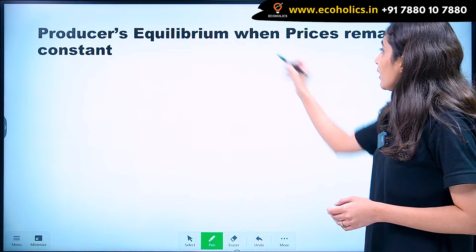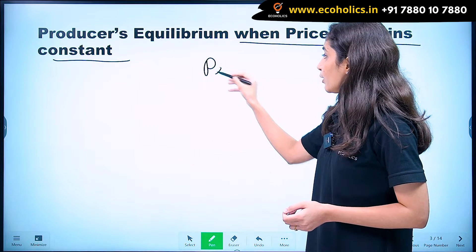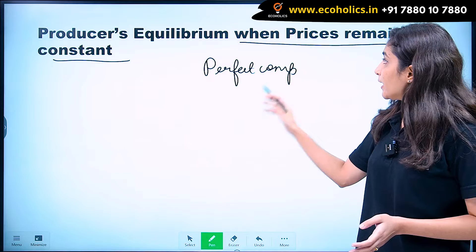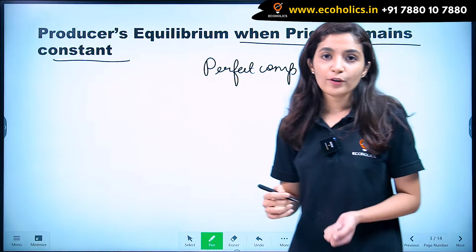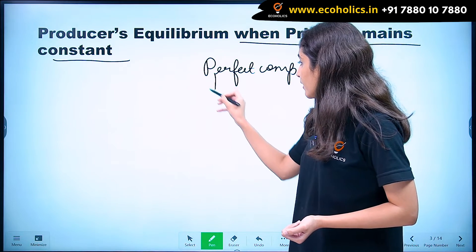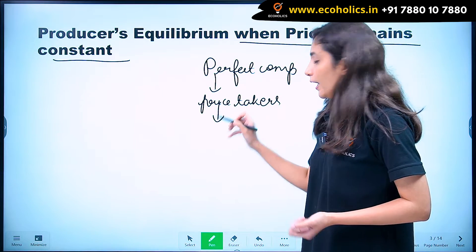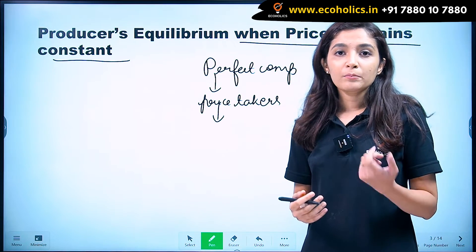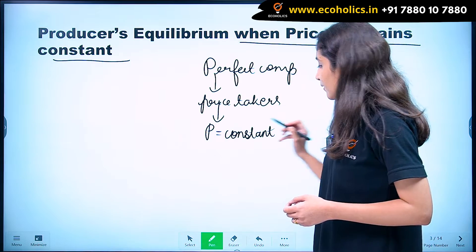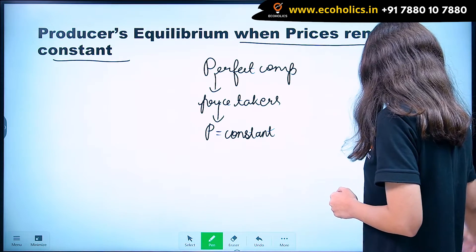Now coming on to our first case, when prices remain constant. This happens when we have perfect competition. In perfect competition, there are a large number of sellers selling a homogeneous product, and therefore all the firms in the industry are price takers. They can sell any amount of output at the prevailing price, so the price remains constant.